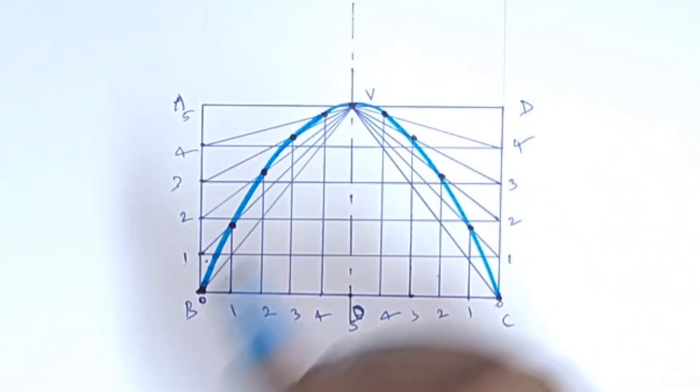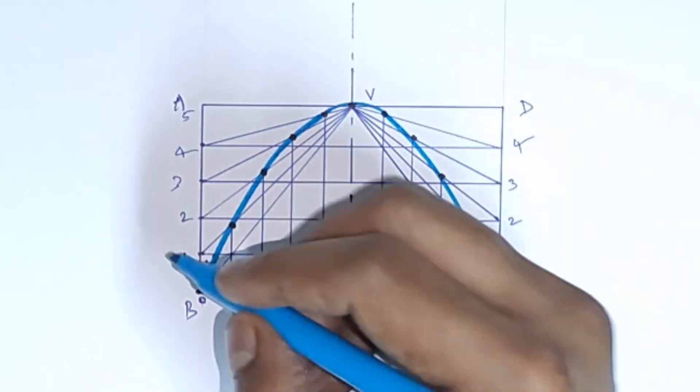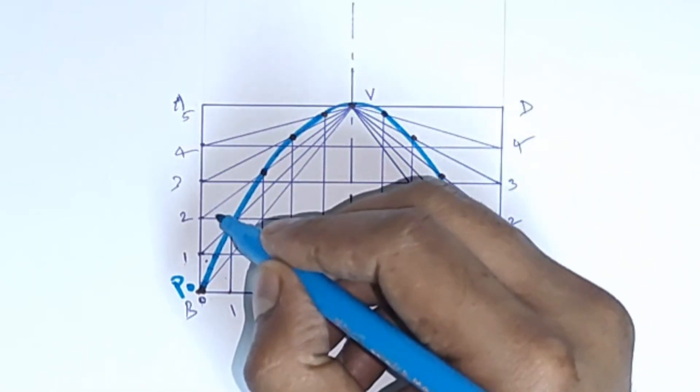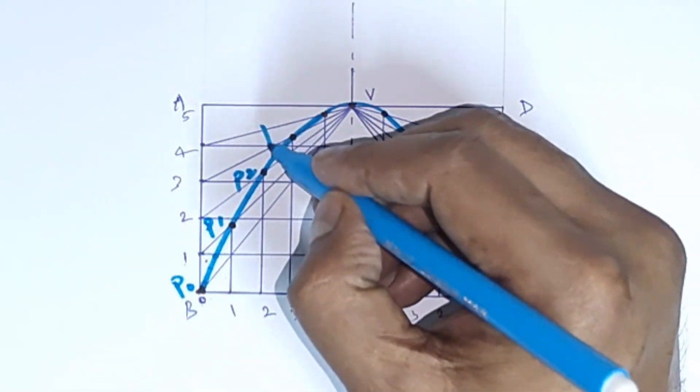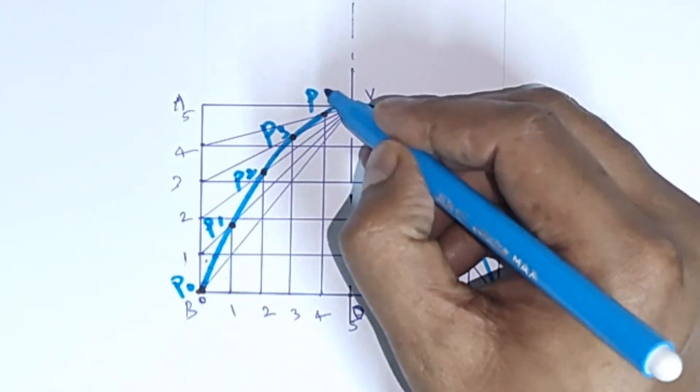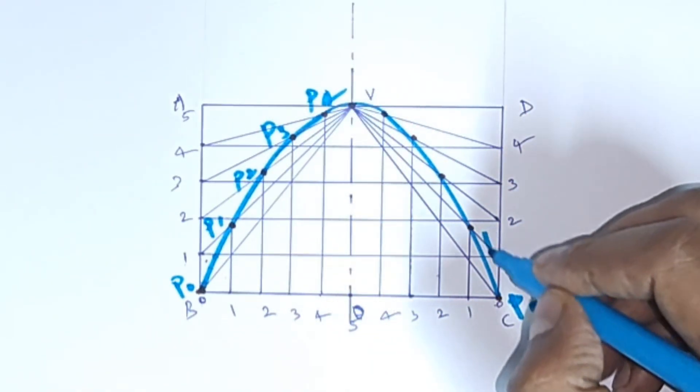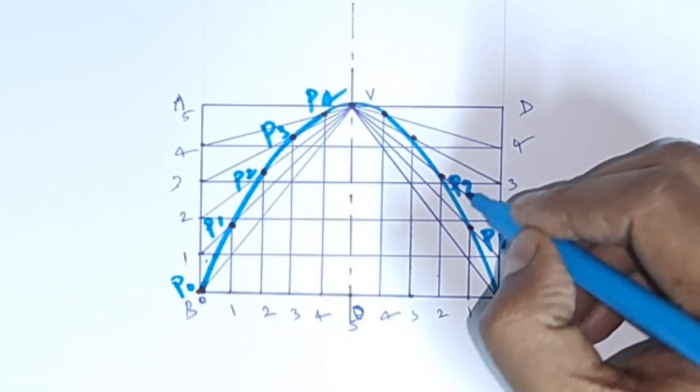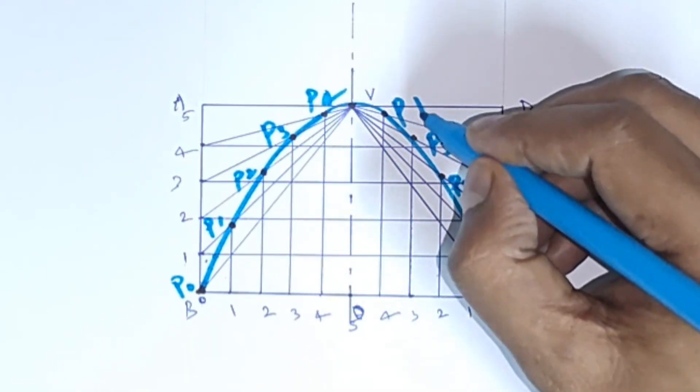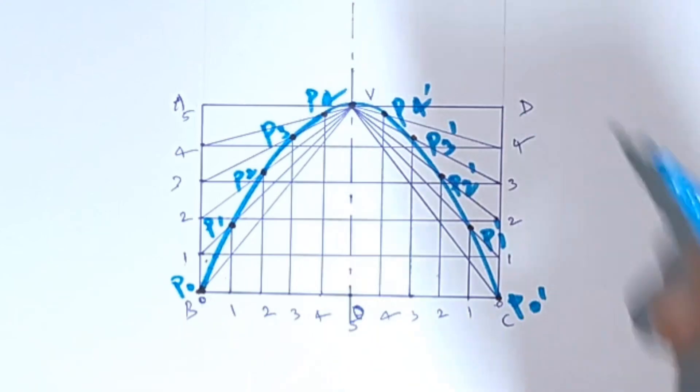Okay, so this pattern. We have examples: P0, P1, P2, P3, P4, and P1 dash, P2 dash, P3 dash, P4 dash.